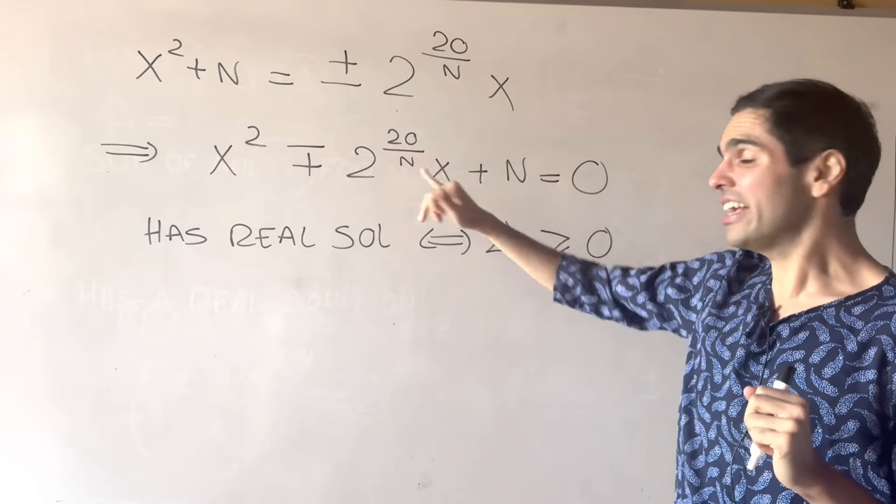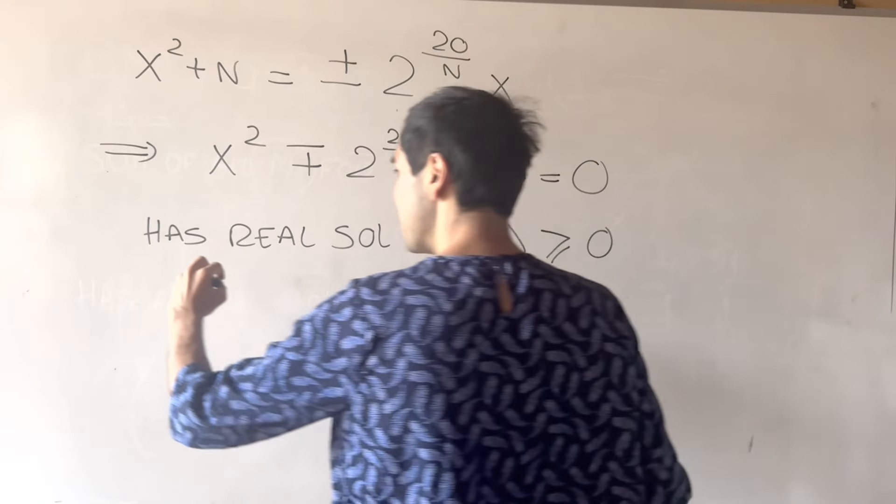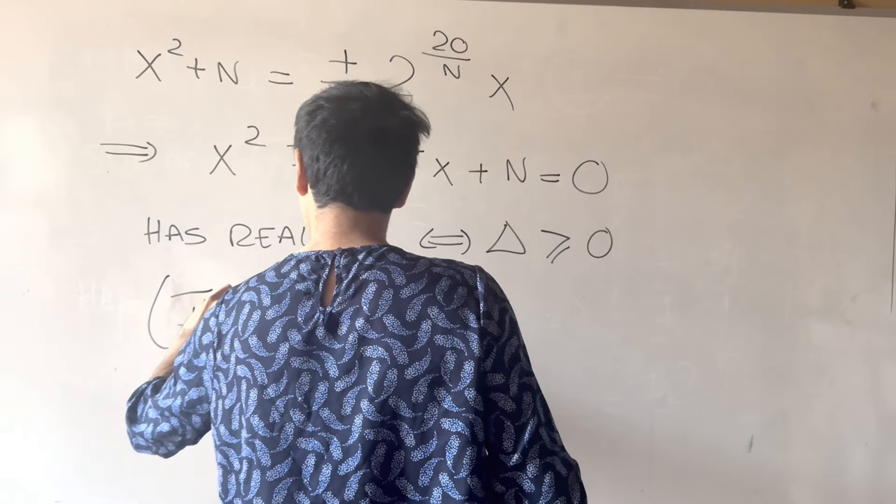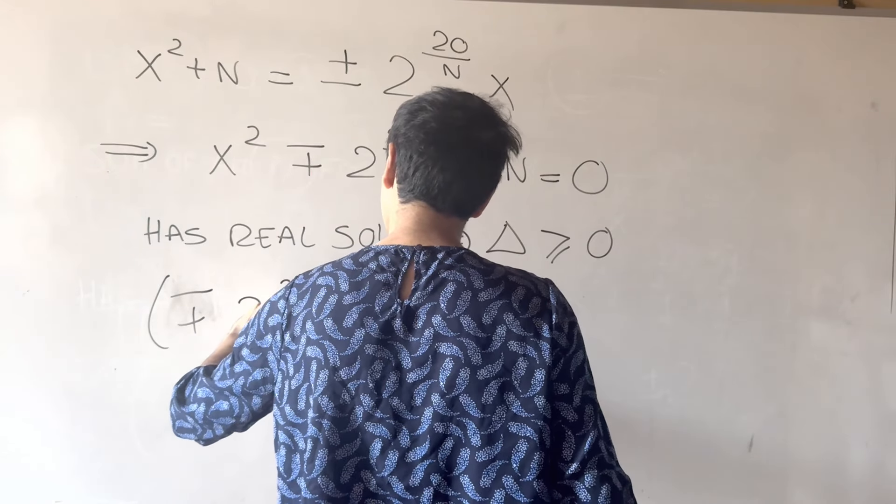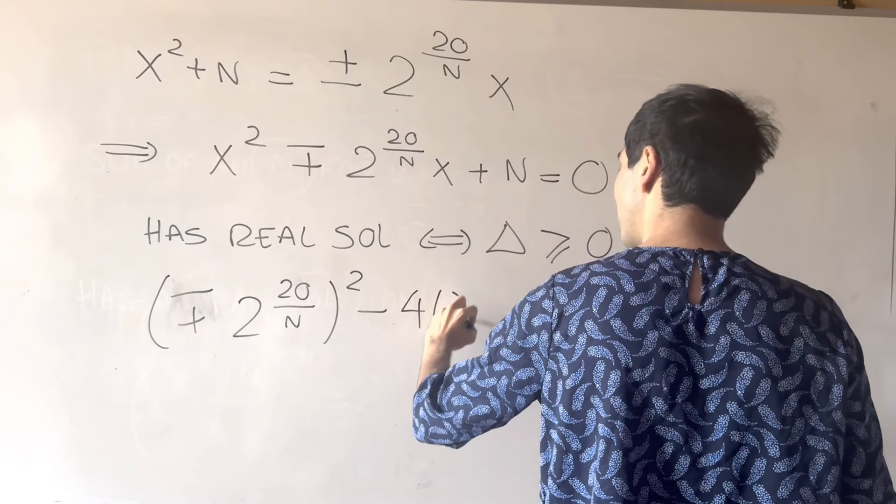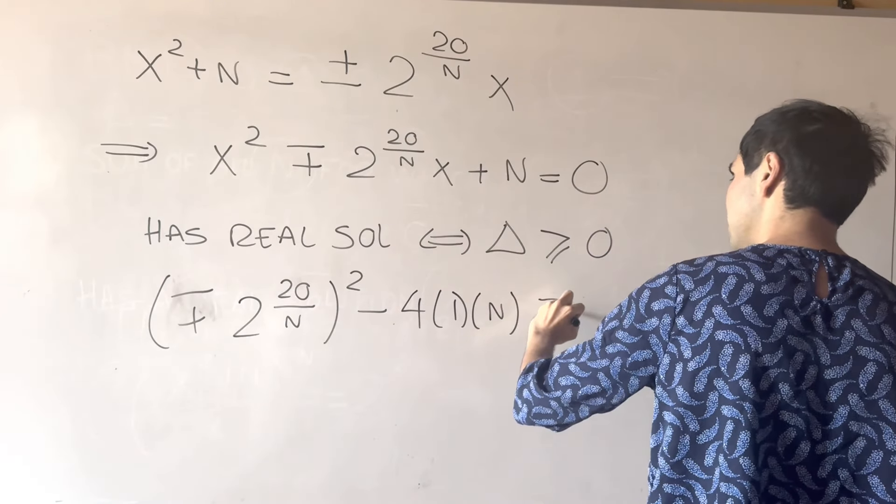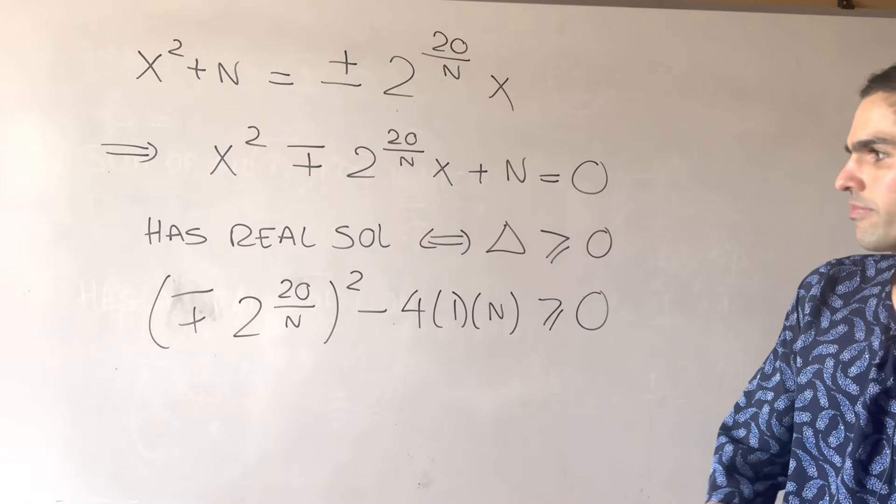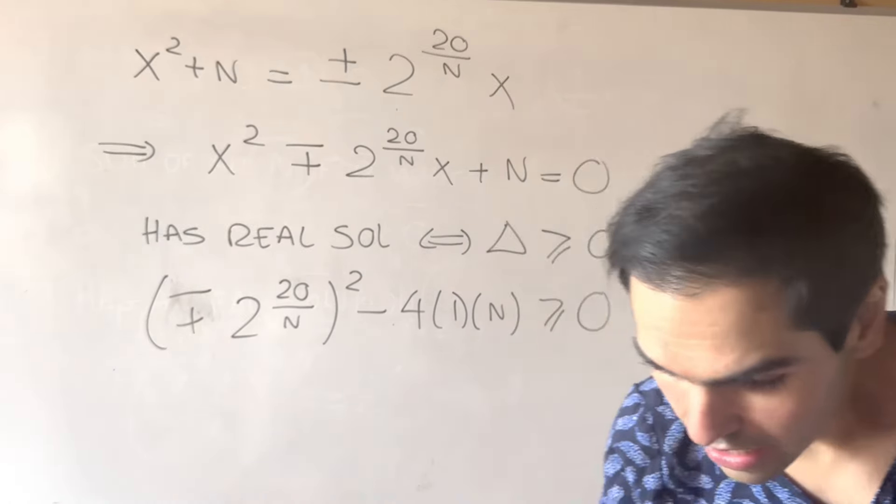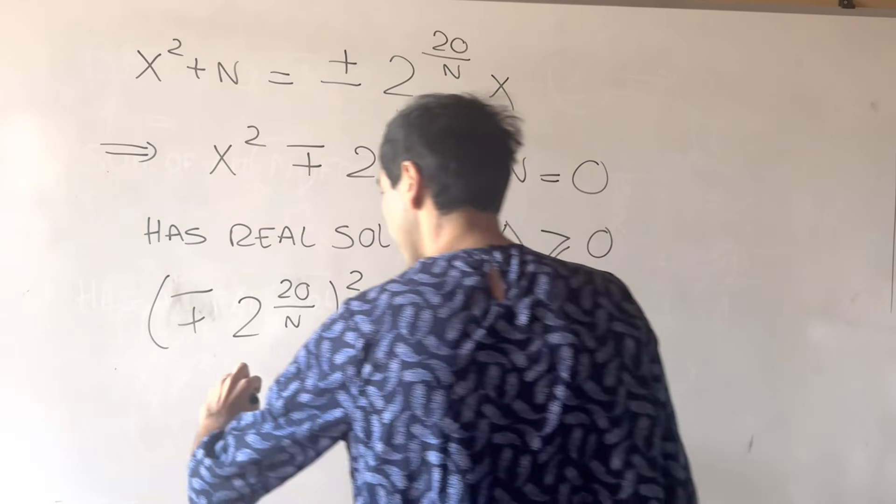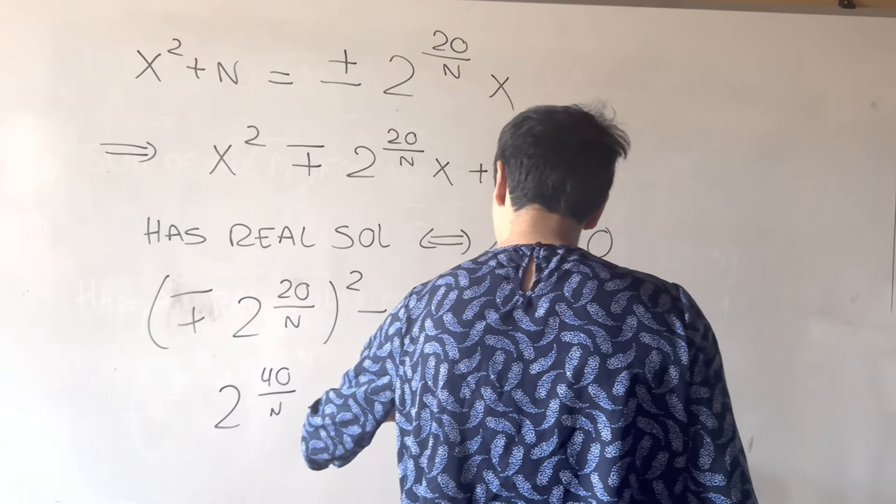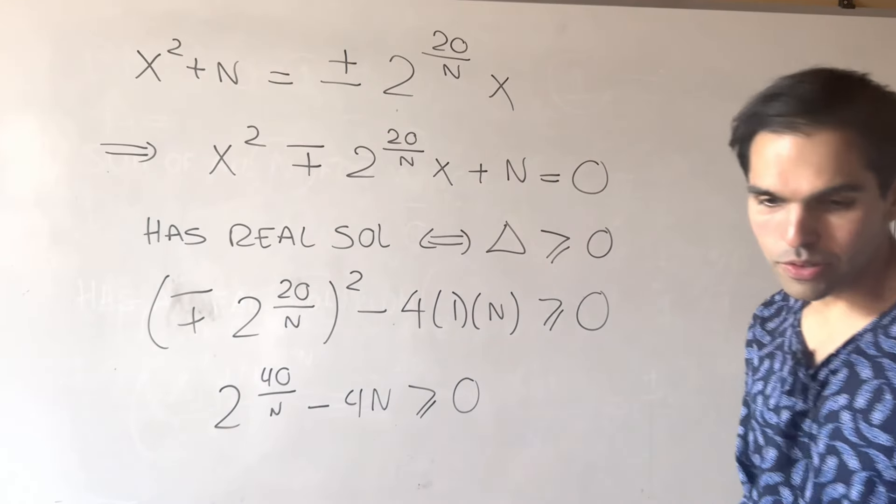All right, so all we need to do is to find the discriminant. So, (2^(20/n))^2 - 4(1)(n) is greater or equal to zero. And that's why I said this plus minus sign doesn't matter because we square it. And so, we get 2^(40/n) - 4n is greater or equal to zero.